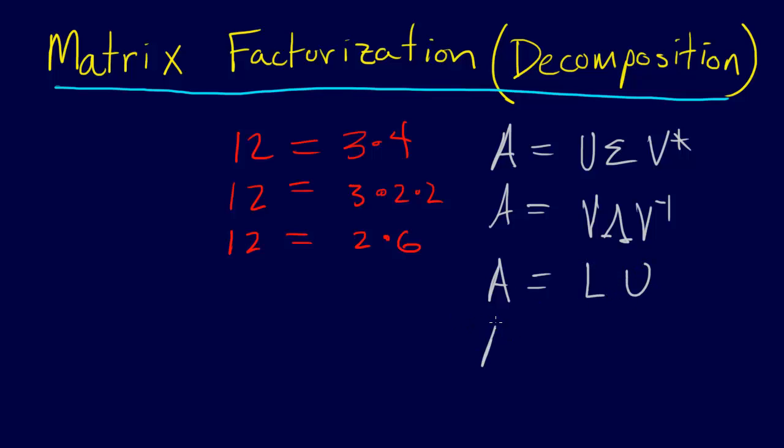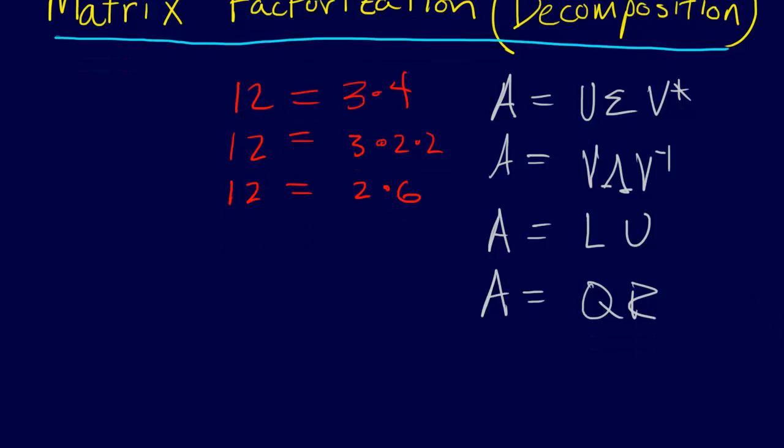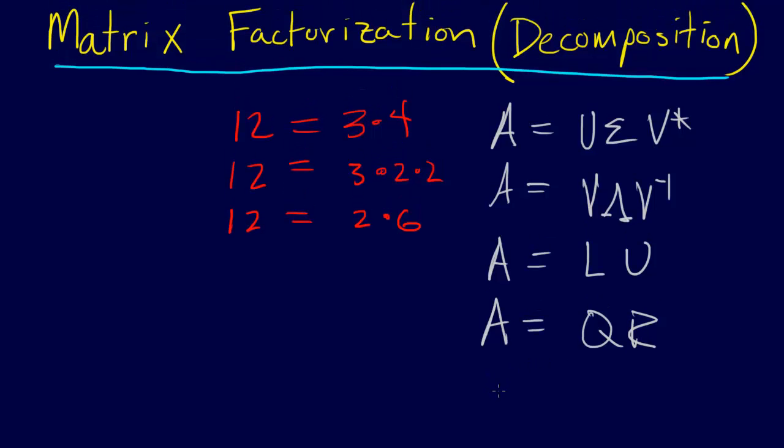Another decomposition of A is QR. That's a factorization. We call it QR factorization or QR decomposition. There's also, we could come up with others. The Cholesky decomposition, which is equal to L L star.